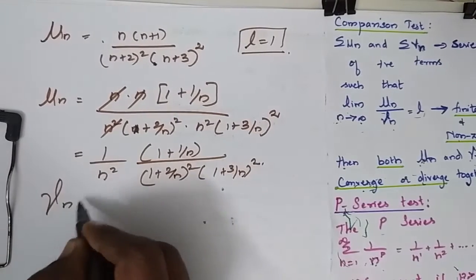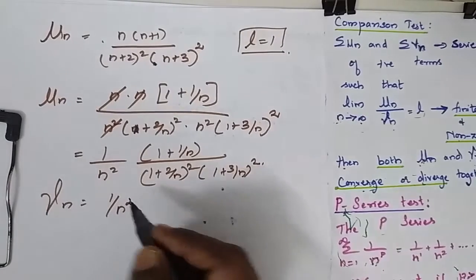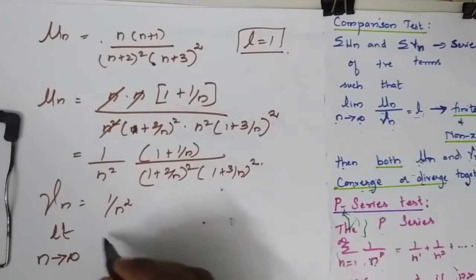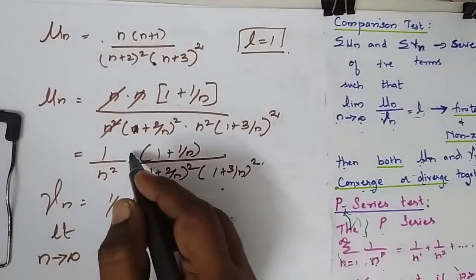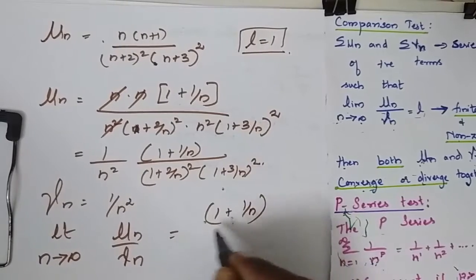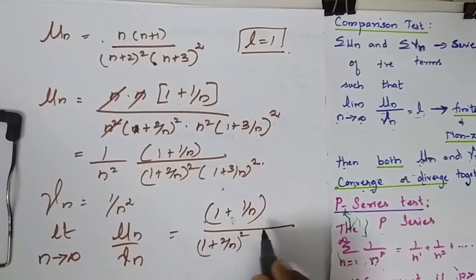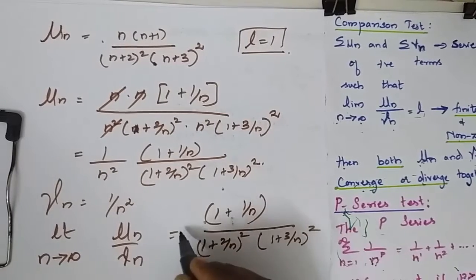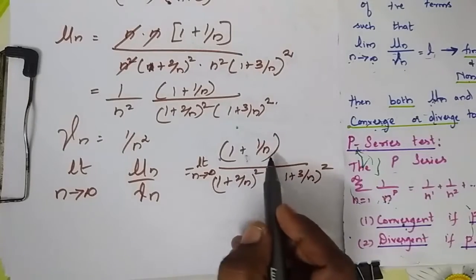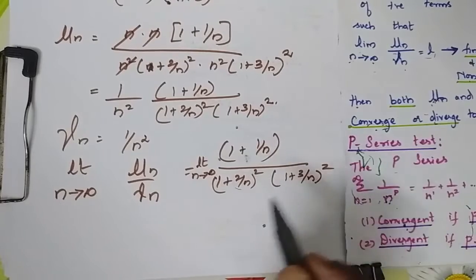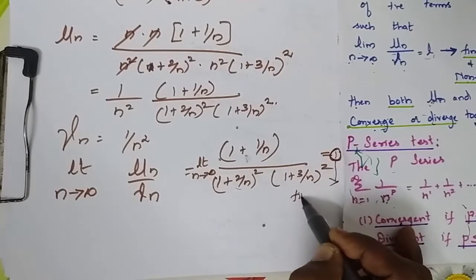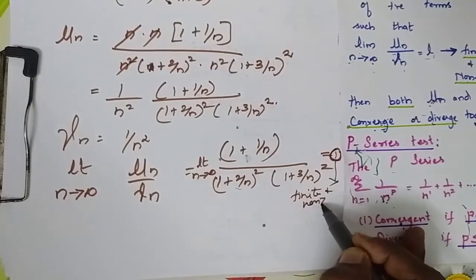Now I consider my v(n) as 1/n². I have to find the limit as n tends to infinity of u(n) by v(n). When I divide by 1/n², the 1/n² cancels and I get 1 divided by (1 + 1/n) times (1 + 2/n)² times (1 + 3/n)². When I substitute the limit, all these terms become 0 and I get the value as 1, which is finite and non-zero.